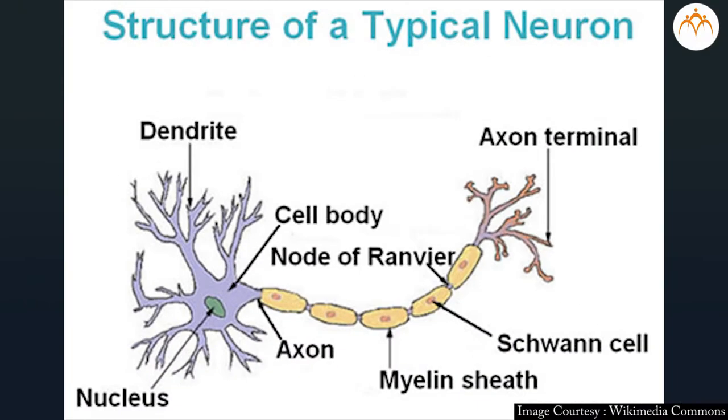Neurons are cells of nervous system that carry information in form of nerve impulses from various body parts to brain and vice versa.